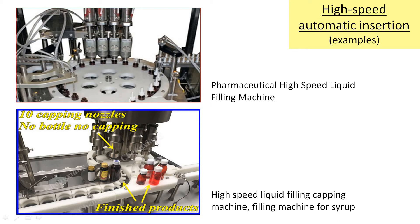Similarly, the next example is a liquid filling machine. You can see there are some grooves in which we can fix the bottles. The bottles come here for bottle filling, capping, and all such work, and then these bottles go for final packing.